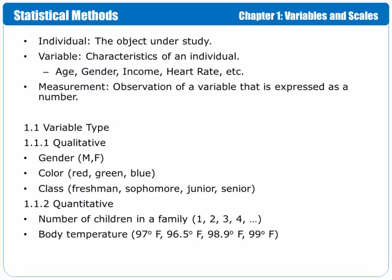Variable types are qualitative and quantitative. Under qualitative, we have essentially non-number categories. So we have gender, where the two different options are male or female. We have color, where red, green, and blue can be the categories. We have class, which could refer to freshmen, sophomores, juniors, and seniors.